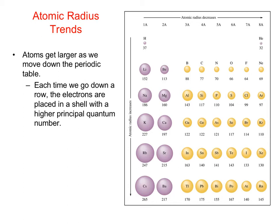There are two directions we consider when looking at periodic trends for atomic radius: how the trend changes as we move up and down a column, and how it changes as we move from left to right across the periodic table. As we go down the periodic table, the trend is pretty intuitive — there are more electrons so the electron cloud is bigger and the atoms get bigger. Each time we go down a row, the valence electrons are in a shell of one higher principal quantum number, and the larger the principal quantum number, the larger the orbital and the farther away on average the electrons are from the nucleus.